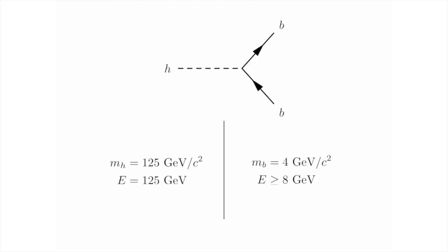The next heaviest quark in the standard model is the bottom quark B, with a mass of 4 GeV/c². So on the right-hand side, I need an energy of more than 8 GeV. Since the Higgs has an energy of 125 GeV in its rest frame, this process is perfectly allowed and is, in fact, the most important decay process of the Higgs in the standard model.